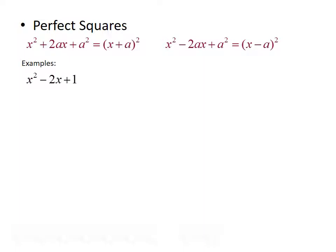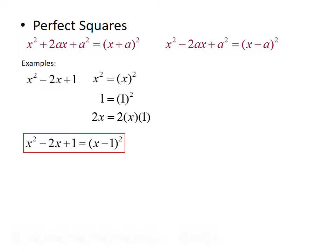For the first example we have x squared minus 2x plus 1. We verify that the first and last terms are both perfect squares, and that the middle term follows the rule 2 times a times x. Since there's a minus sign on the middle term, we'll use the second formula. x squared is x quantity squared, 1 is 1 squared, and 2x equals 2 times x times 1. So x squared minus 2x plus 1 factors to be x minus 1 quantity squared.